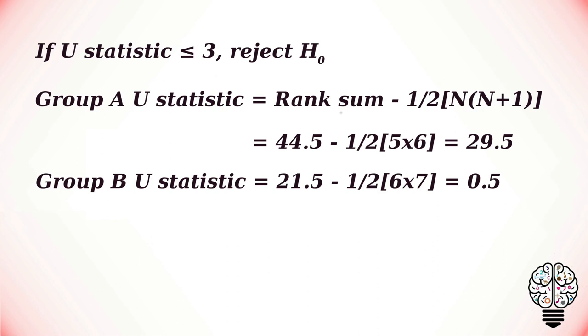Now we have to compare these two rank values and we have to use the smaller one, which is 0.5. Since the U statistic is less than or equal to the critical value of 3, the null hypothesis is rejected and there is a statistical difference between the two groups.